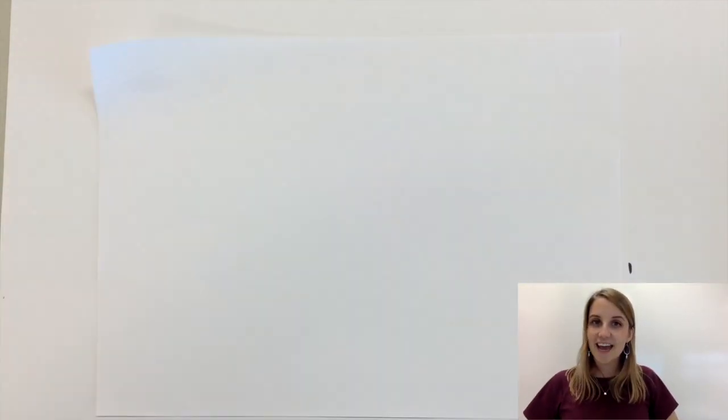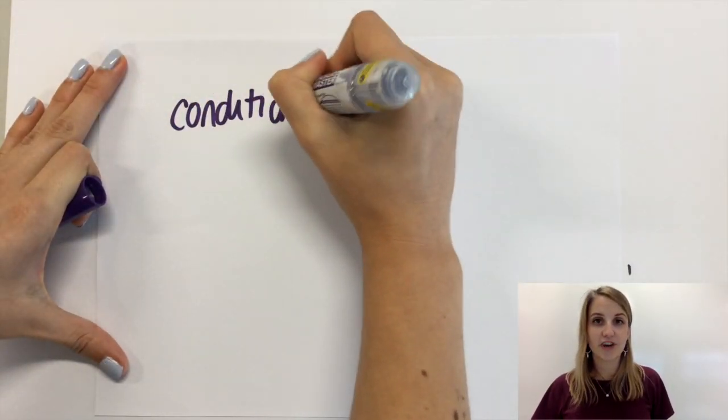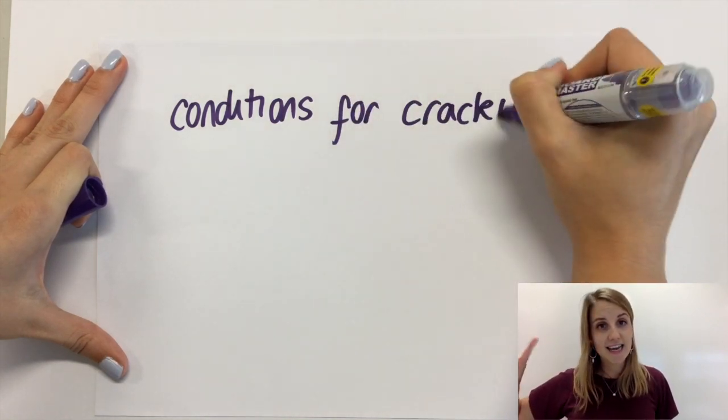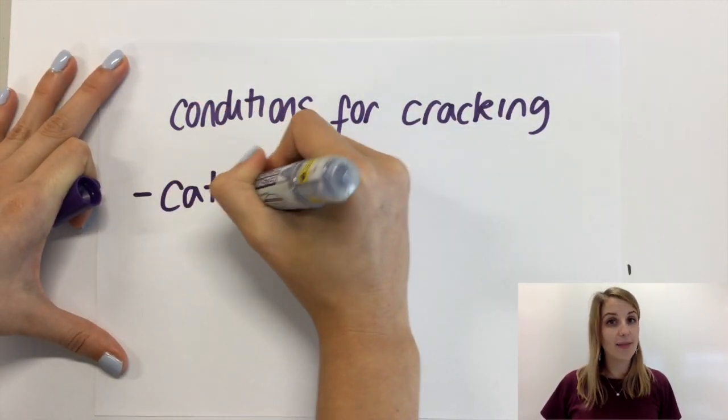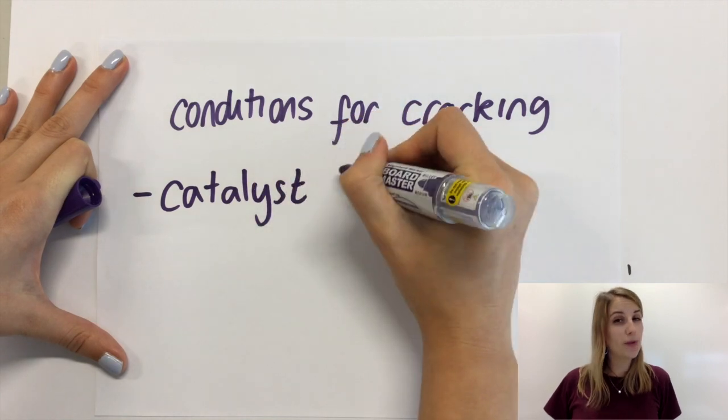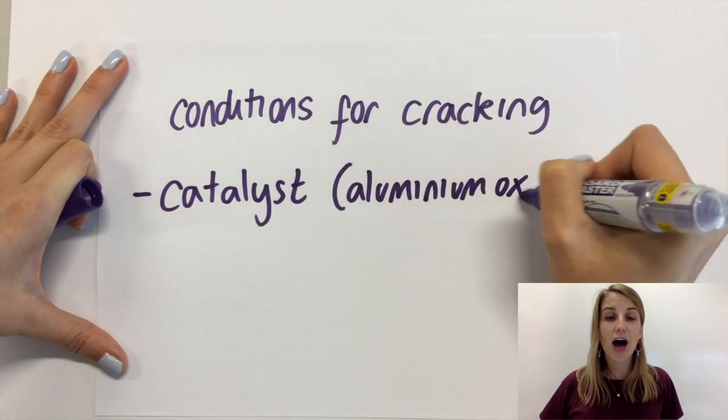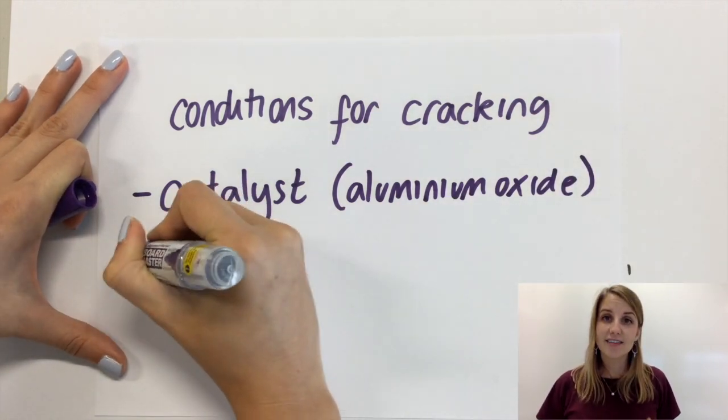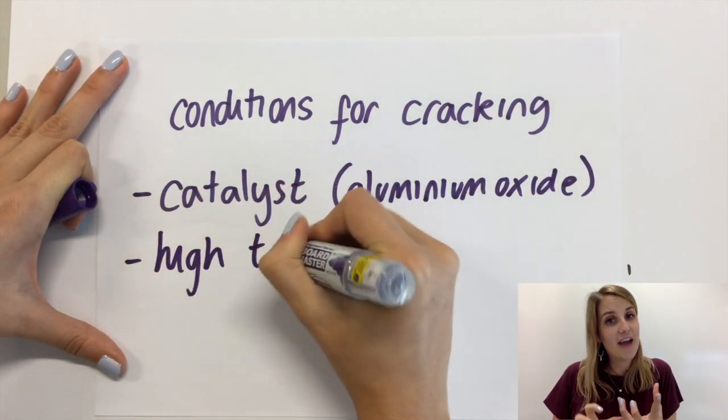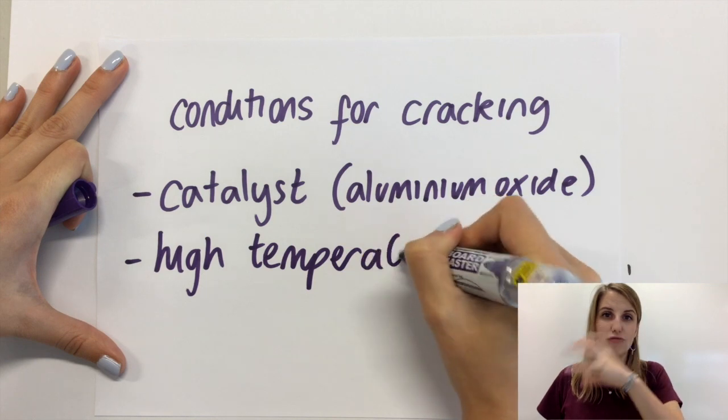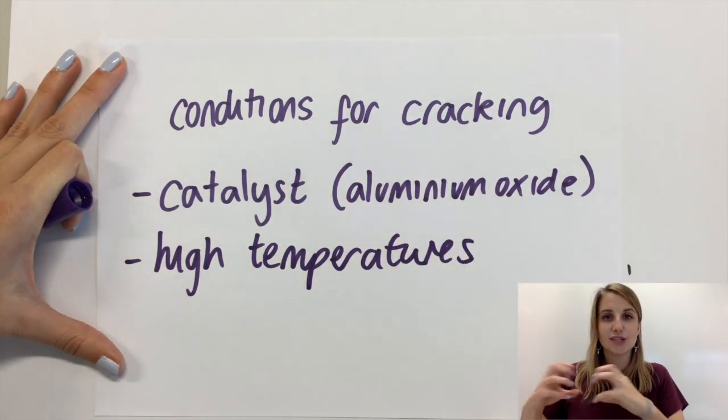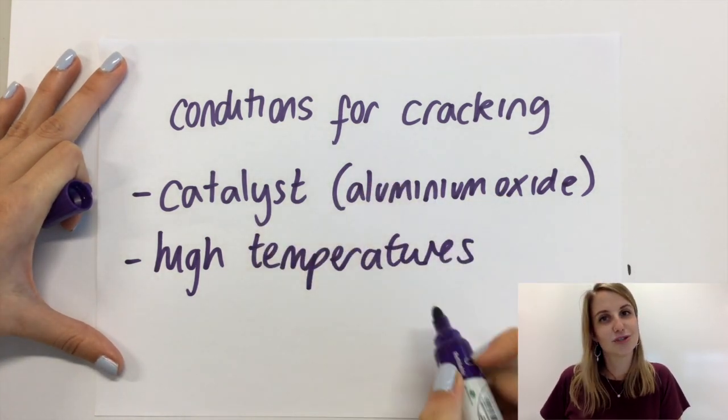Last thing for today are the conditions that you need for cracking. So firstly you need a catalyst normally of aluminium oxide or alumina as it's sometimes called and you need super high temperatures and this turns everything into a vapour and means that vapour can run over the catalyst so it can be cracked into those two products.